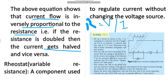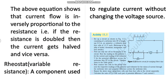There are two types of resistance: fixed resistance and variable resistance. A rheostat is a component used to regulate current without changing the voltage source. We can vary the resistance and thereby control the current.